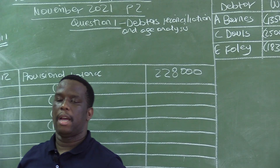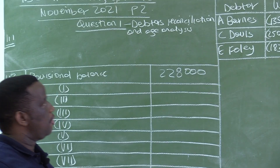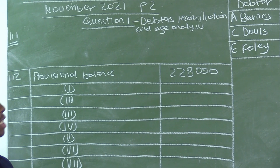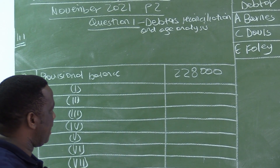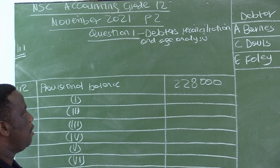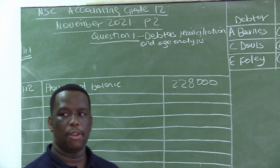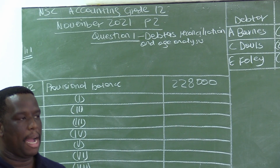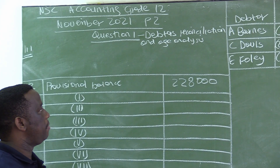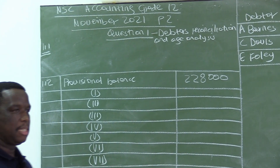Remember, debtors are the people who owe the business. These people buy from us on credit. So whenever we are selling our goods on credit, we give those people a special name — they are called debtors. Here we are doing debtors reconciliation, correcting some mistakes which may arise when we are keeping records for debtors. It is the responsibility of every business to keep proper accounting records so that you have the correct balances of amounts owed by these debtors.